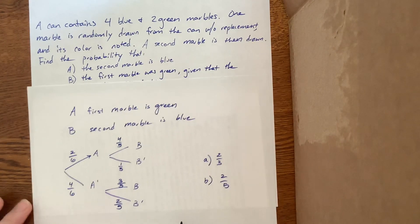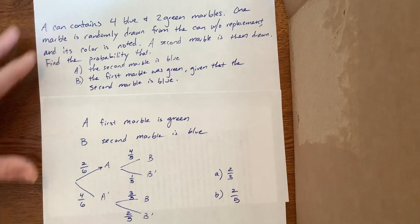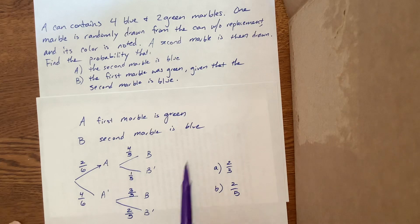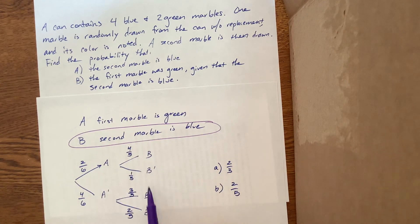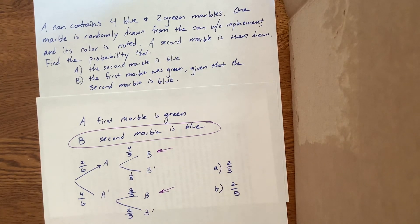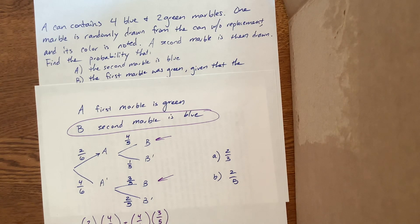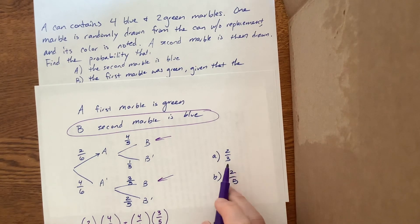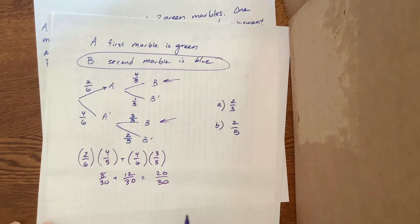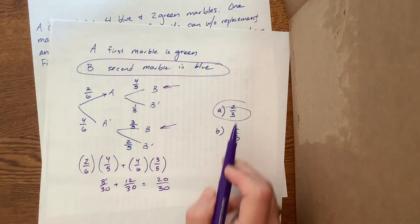The first question asks: find the probability that the second marble is blue. That means I need to reach the blue outcome from either branch. So that's two-sixths times four-fifths, plus four-sixths times three-fifths, which is eight over thirty plus twelve over thirty, equal to twenty over thirty, which reduces to two-thirds. And that matches the book's answer.